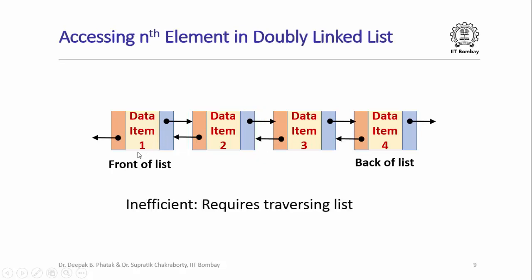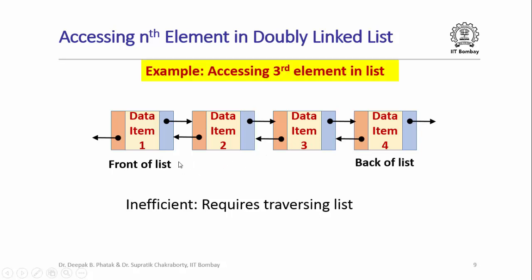However, if you wanted to access the nth element in a doubly linked list, this is going to be fairly inefficient because you don't directly have a way to reach the nth element. You will actually have to traverse the list from its front. For example, if I were to access the third element, I'll have to start from the front, go to the second element using the forward links, and then to the third element — and only then would I be able to access it.